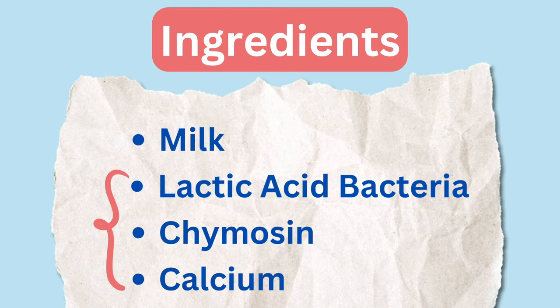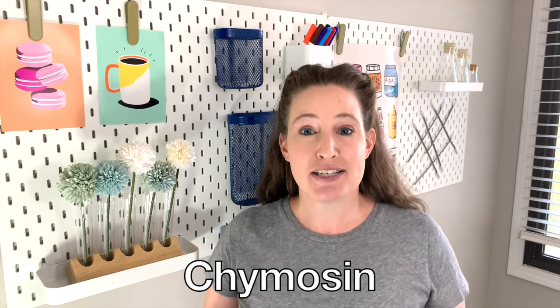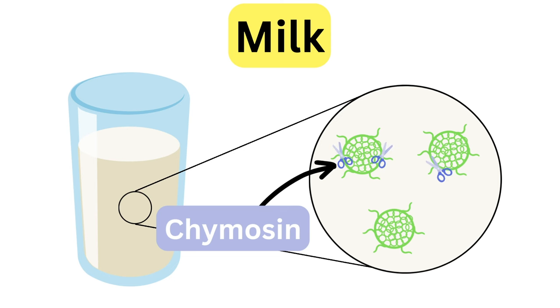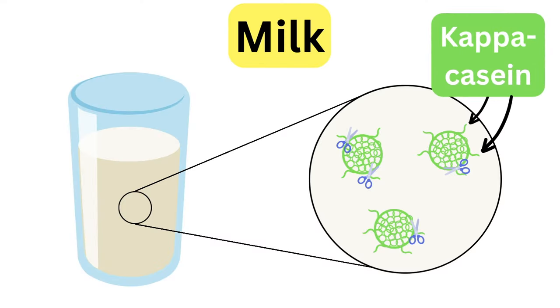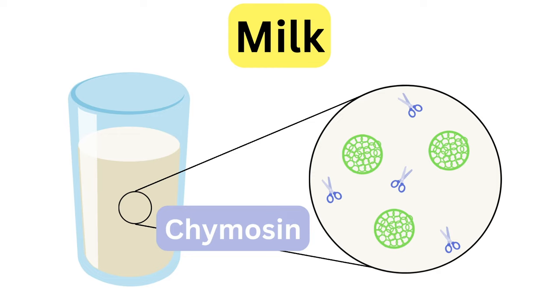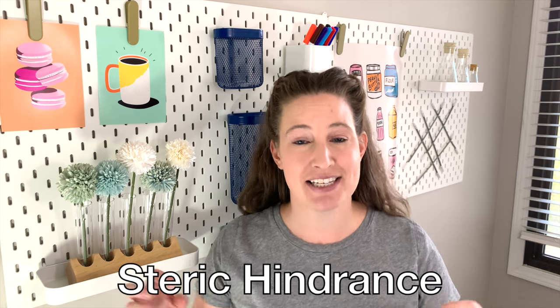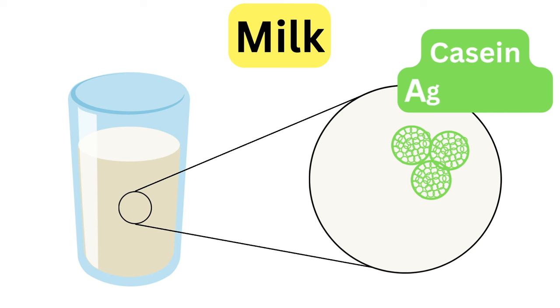Now let's look at how those added ingredients each impact casein. The enzyme chymosin acts like scissors and cleaves off the hairs protruding from the casein micelles — that hairy portion is actually kappa casein. Chymosin cleaves off part of kappa casein, making the casein micelles almost bald. This removes what we call steric hindrance, which previously prevented micelles from contacting each other. Now that the casein is more bald, the micelles don't mind coming together to form larger aggregates.